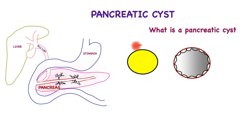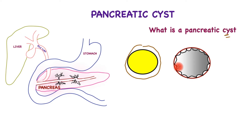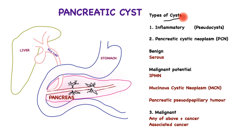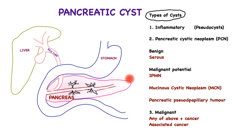The definition of a cyst is a sac that is filled with fluid. Within the body, a true cyst is one that has a lining called epithelium and is filled with fluid. Of those cysts found on scans performed for other reasons, only 0.01 percent turn out to be significant. The rest are benign.